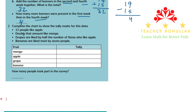Over here we have the information. It says 12 people like apple, double that amount like mango, grapes are liked by half the number of those who like apple, and bananas are liked most by 7 people. We have the chart here with fruits: mango, apple, grape, and banana.